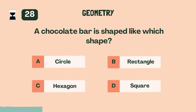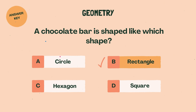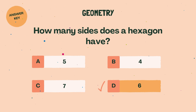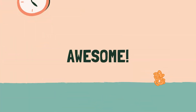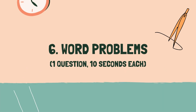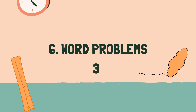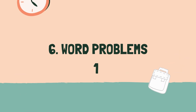A chocolate bar is shaped like which shape? B, rectangle. 3, 2, 1, go.